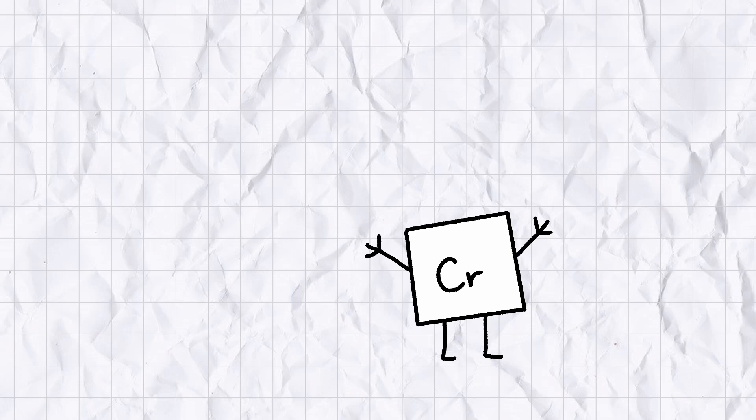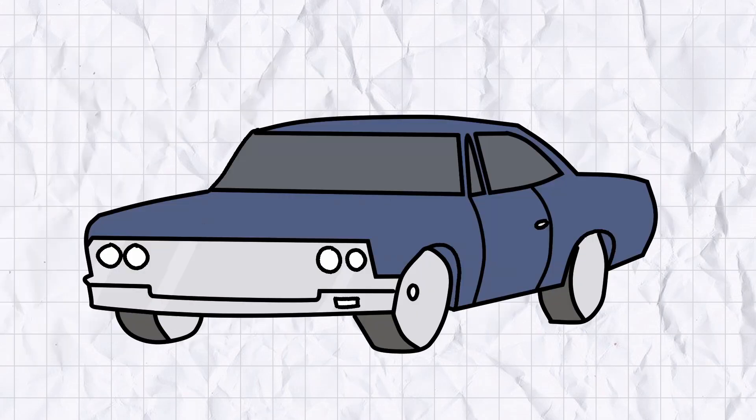After World War II, chrome plating was used on everything from cutlery to jewelry to handguns, but nowhere was its use more iconic than in the automotive industry. In the 1960s, chrome plating was something of a status symbol.